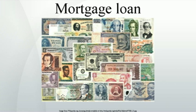Graduated payment mortgage loans have increasing costs over time and are geared to young borrowers who expect wage increases over time. Balloon payment mortgages have only partial amortization, meaning that the amount of monthly payments due are calculated over a certain term, but the outstanding principal balance is due at some point short of that term, and at the end of the term a balloon payment is due.